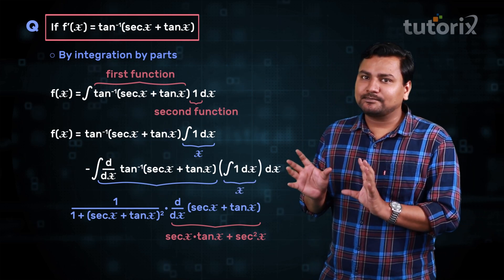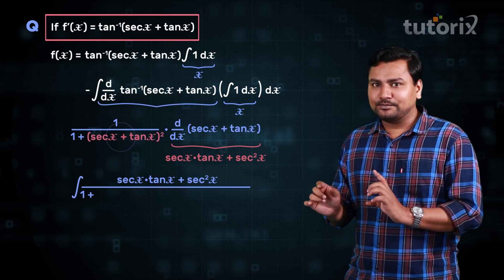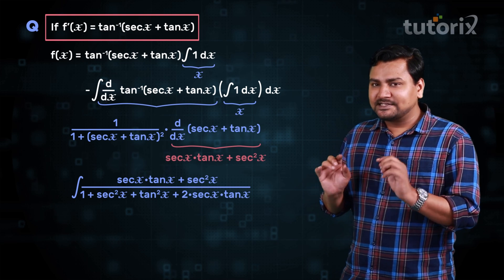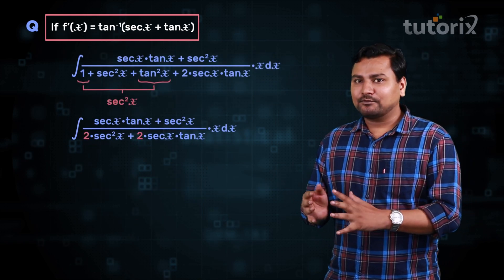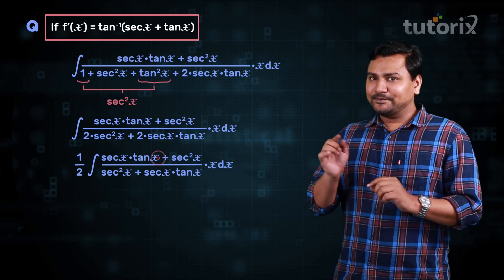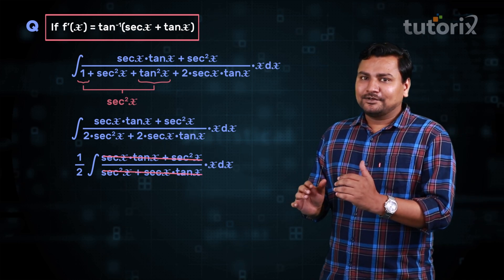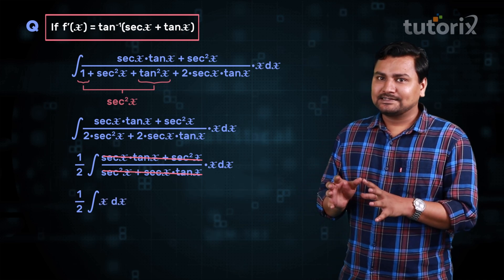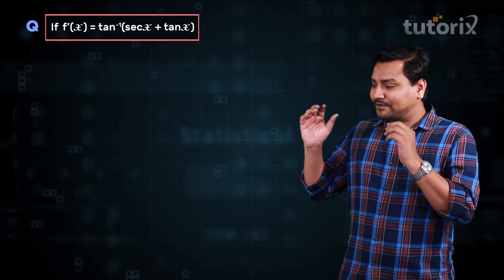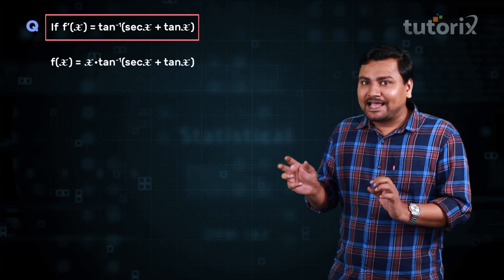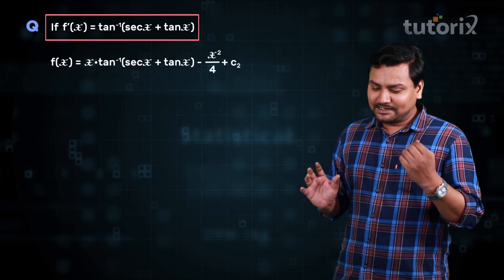The derivative of tan inverse (secant x plus tan x) is 1 over (1 plus (secant x plus tan x)²) times (secant x tan x plus secant² x) by the chain rule. In the denominator, expanding (secant x plus tan x)² gives sec²x plus tan²x plus 2 sec x tan x, and using 1 plus tan²x = sec²x simplifies the denominator to 2(sec x tan x plus sec²x). The numerator (sec x tan x plus sec²x) cancels with the denominator factor, leaving 1/2. So the remaining integral is (1/2) times the integral of x, which is x²/4.